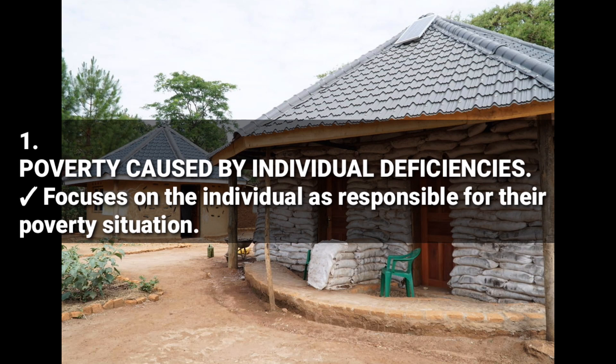The first theory is poverty caused by individual deficiencies. It explains that being poor comes from the individual — it focuses on the individual as responsible for their poverty situation. Like, you are poor because you want to be poor, because your mind is poor. The first theory blames the individual for the situation they are in.